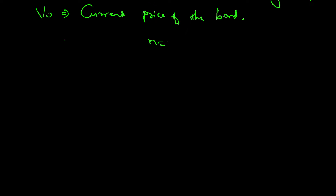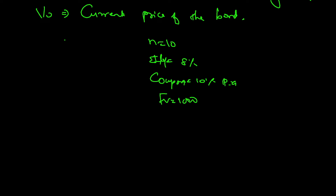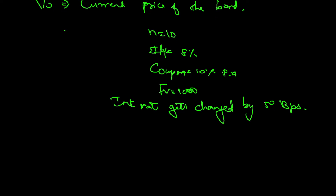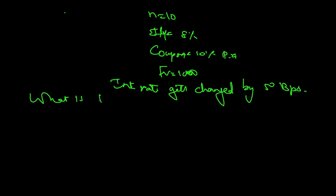Let's do this with an example. There is a bond with 10-year maturity, IY is equal to 8%, coupon is equal to 10% per annum, future value is 1000, and the interest rate gets changed by 50 basis points — that is half a percentage. In this case, what is the effective duration, i.e., how much will the bond price change?